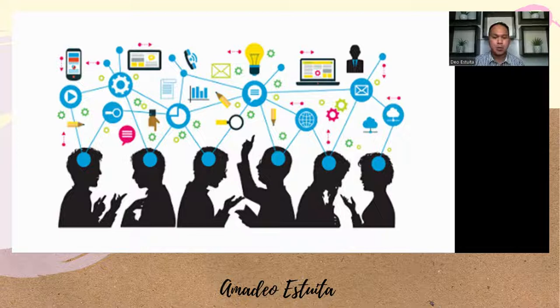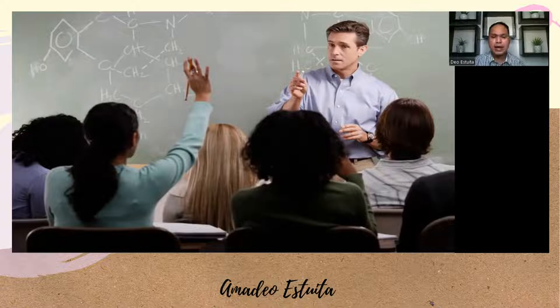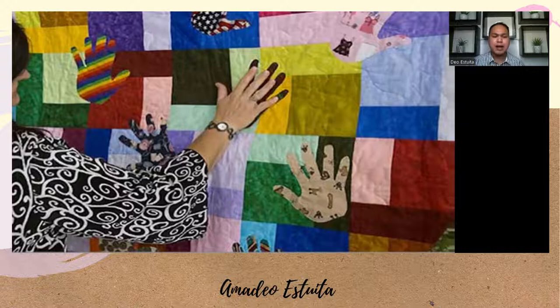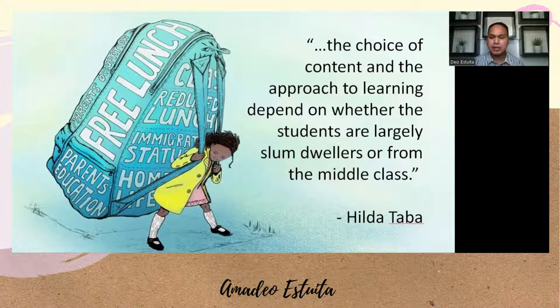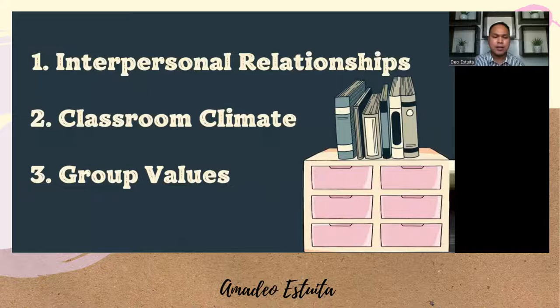Taba wrote that educators should diagnose where students are as learners in addition to achievement. This included understanding students' backgrounds, cultures, motivational patterns, how they learn socially, and what cultural capital they bring from home to the classroom. Taba writes that when considering learning to read, the choice of content and the approach to learning depend on whether the students are largely slum dwellers or from the middle class. Taba also felt it is essential to consider interpersonal relationships, the classroom climate, and group values when diagnosing curriculum needs.